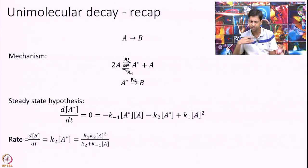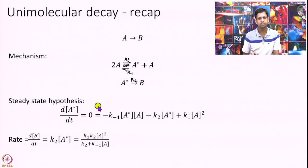That is our mechanism. I can build kinetics on top of it. I can find what is dA over dt, dA star over dt, and dB over dt. Then we make the steady state hypothesis which assumes dA star over dt is 0. The steady state hypothesis is that the intermediate population does not change with time. So we set that to 0, and finally the rate which is nothing but dB over dt is equal to K2 into A star, and finally get rate as this.